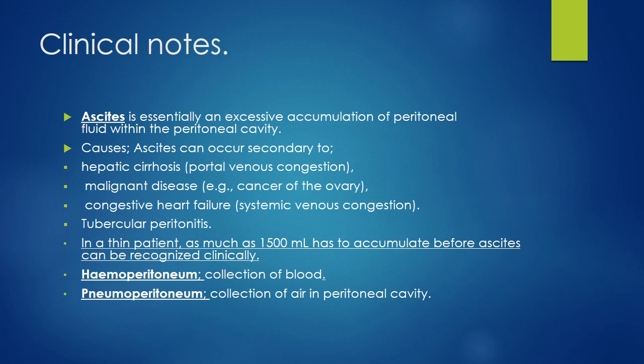Now a few important clinical points related to peritoneal fluid. Normally less than 50 ml of fluid is present in the peritoneal cavity. If there is an excessive accumulation of peritoneal fluid in the peritoneal cavity, the condition is called ascites. Ascites can occur secondary to hepatic cirrhosis with portal venous congestion, in malignant diseases, in congestive heart failure when there is systemic venous congestion, as well as in tubercular peritonitis. In a thin patient as much as 1500 ml has to accumulate before ascites can be recognized clinically, but much less can be detected on ultrasound. There is another condition called hemoperitoneum — that is collection of blood — while pneumoperitoneum is collection of air in the peritoneal cavity.